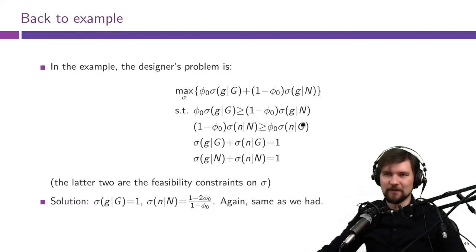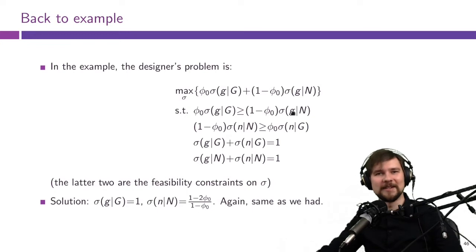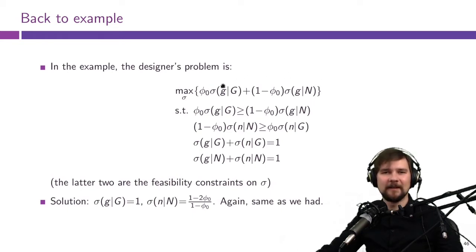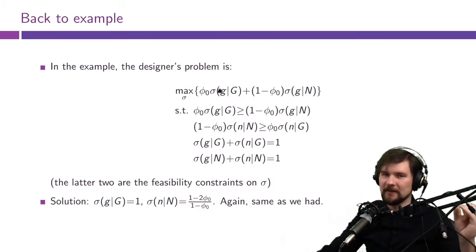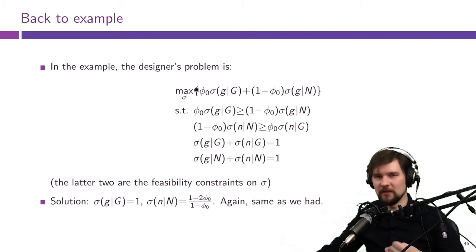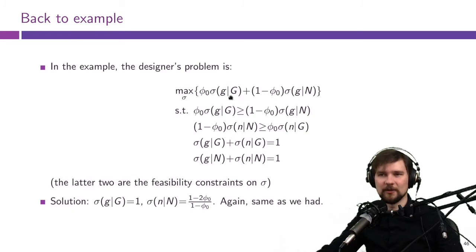Now let's use this approach to solve our example with the prosecutor and the judge. I've written down the objective function and all the constraints from that problem. The objective function is the expected utility of the prosecutor over all recommended action profiles and all states — specifically, the expected utility from recommending action g (convict) to the judge.